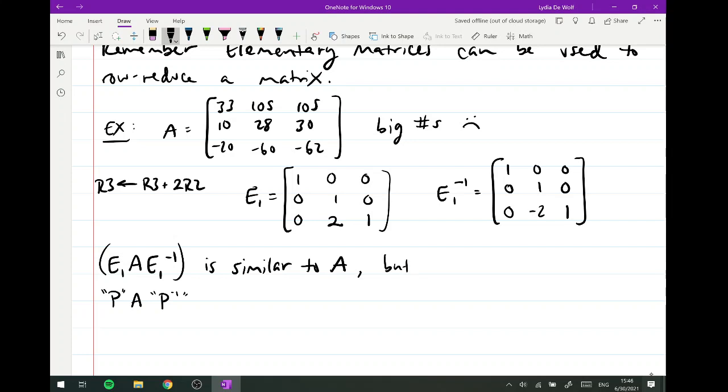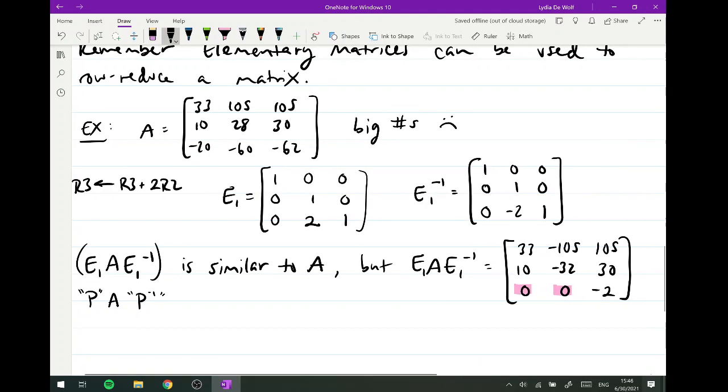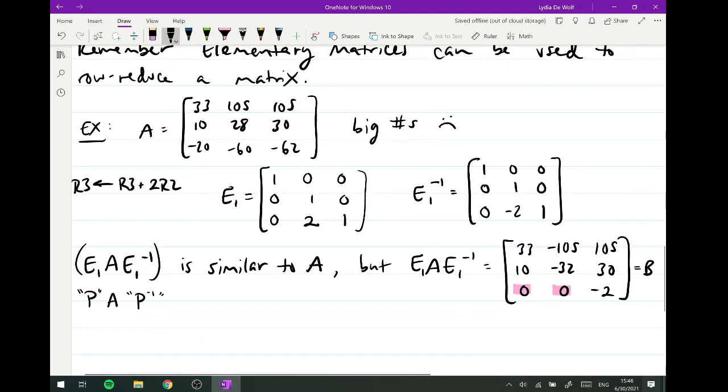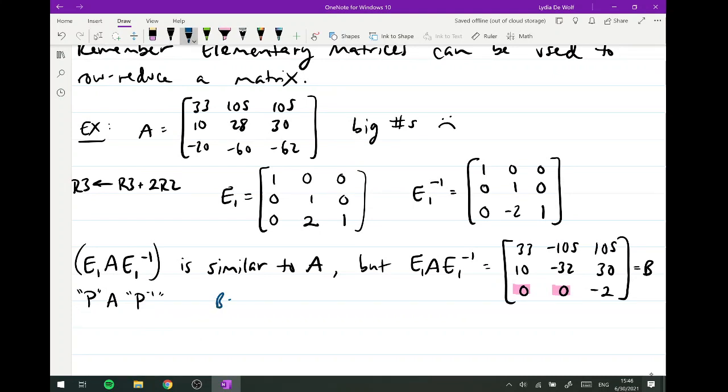Now, the inverse of that matrix E1 is going to be whatever elementary matrix you would need to undo that. So to undo taking row three and adding two times row two to it, we would take row three and subtract two times row two from it. So this is the inverse of that E. This guy undoes this operation. Now, if I were to multiply E1 times A times E1 inverse, that looks a heck of a lot like some kind of P times A times P inverse, right? So this matrix, if I did this multiplication, that matrix is similar to A.